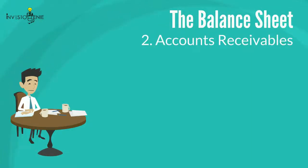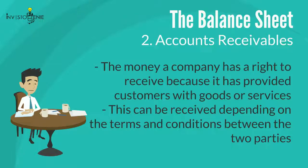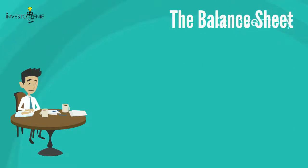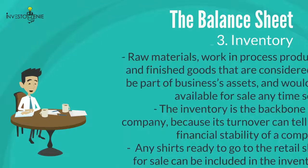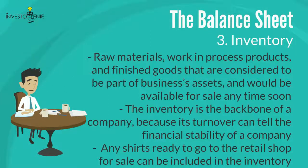Two: accounts receivable, or receivable, is the money a company has a right to receive because it has provided customers with goods or services. This can be received depending on the terms and conditions between the two parties. Three: inventory is the raw materials, work-in-process products, and finished goods considered to be part of a business's assets and available for sale. Inventory is the backbone of a company because its turnover can indicate the financial stability of the company.